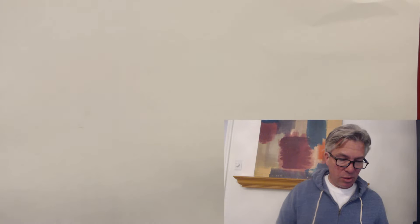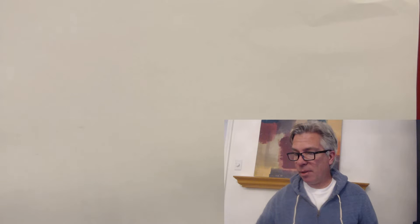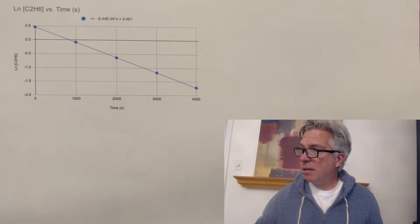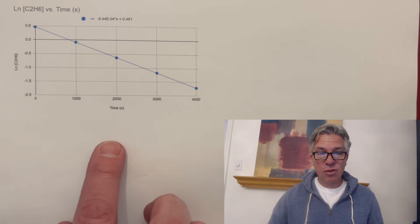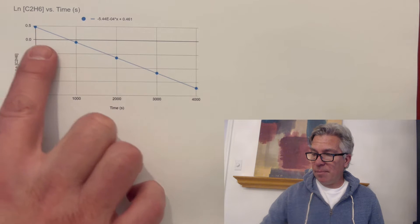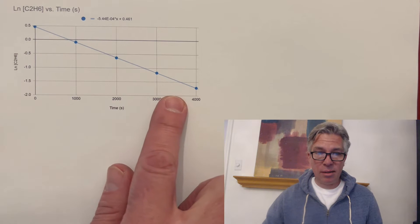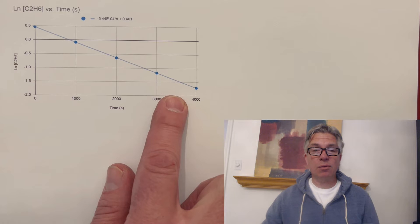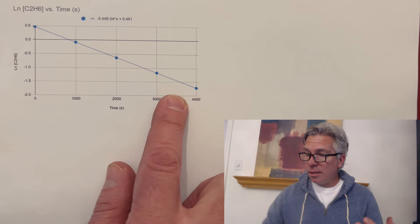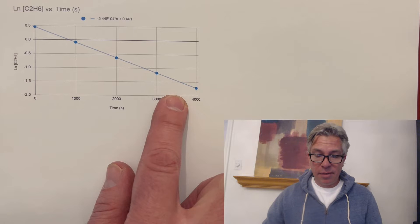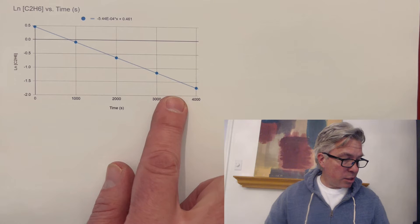But then I went ahead, because I know it's first order, they told me, I went ahead and made this graph. I took the data and I took the natural log of all the concentrations, just in my spreadsheet, and I plotted that. And check it out. I got a straight line, which is typical of a first order reaction. So we know that they're right. So I plotted it. I verified that it's first order.